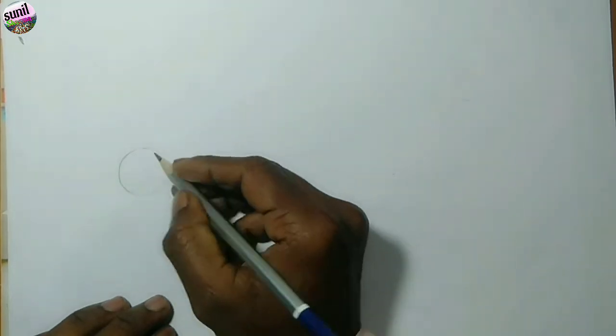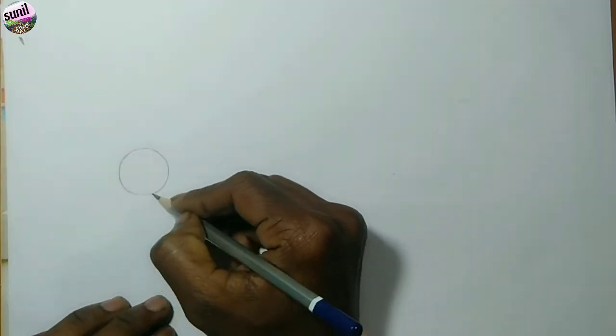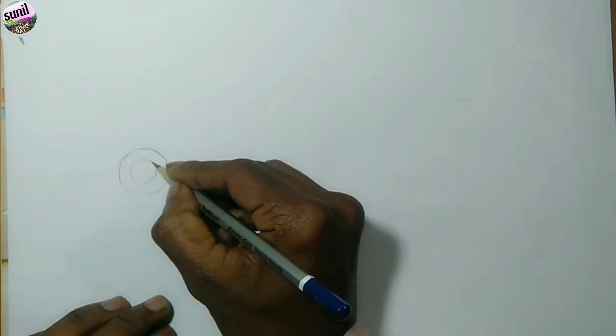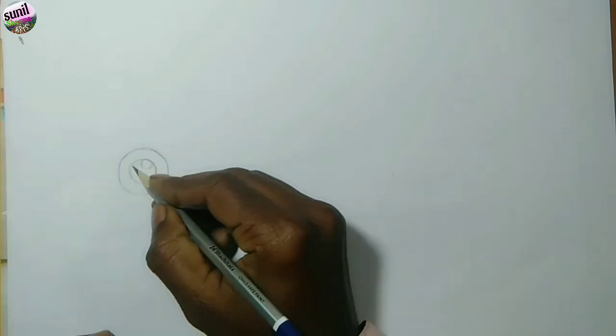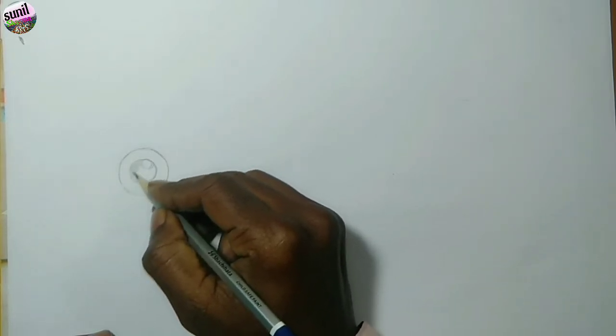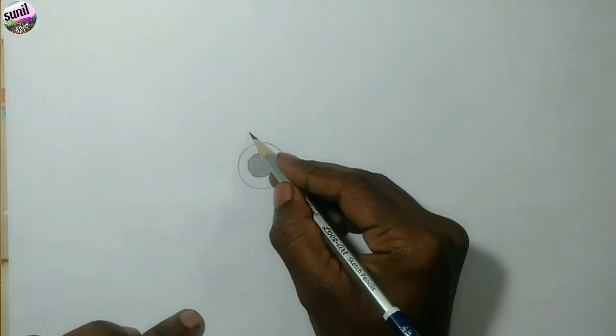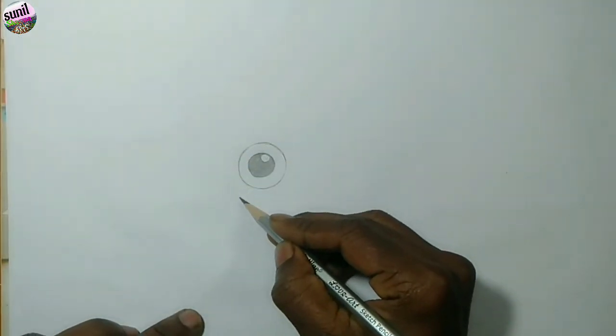So first, let's talk about the eyeball. This is an eyeball and this is the black part of the eyeball. This is our eyeball.